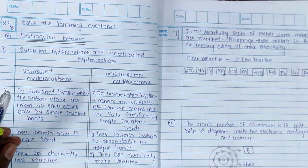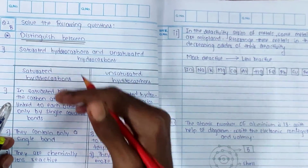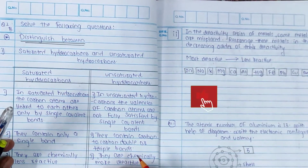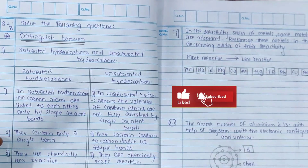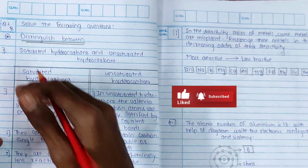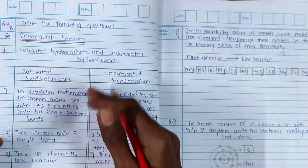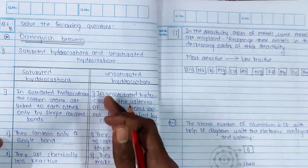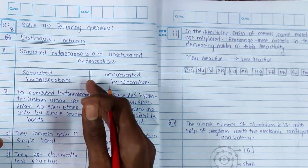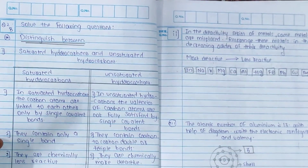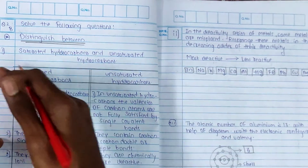With that, for 'distinguish between' questions, you have to make a box — it is very compulsory. If you don't make a box, without a box you just write a line and move on. You have to make a box for distinguish between answers.